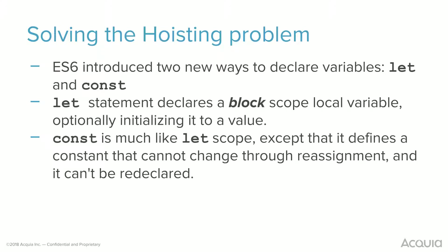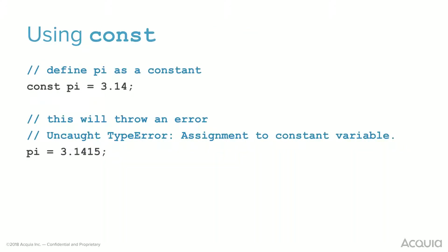ES6 introduced two new ways to declare variables: let and const. They help with block scope. The let statement declares a block-scoped local variable and optionally initializes it to a value. Const is very much like let, except you can't change it — you can't redeclare it, it will throw an error. This is really helpful for things we don't want to change, like pi. If we do const pi equals 3.14, trying to reassign it gives 'assignment to a constant variable.'